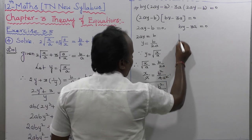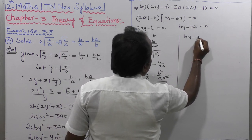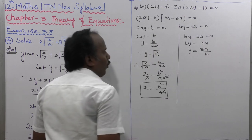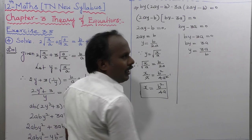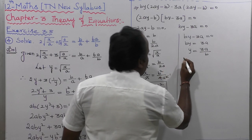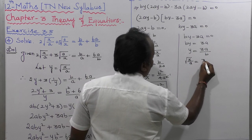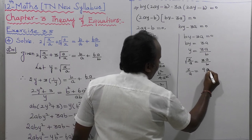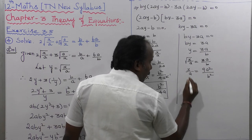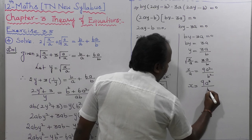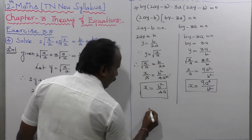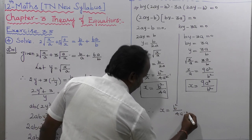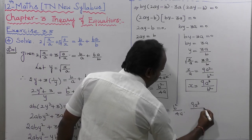Going to the second factor to find the Y value: BY minus 3A equals 0, so BY equals 3A, giving Y equals 3A by B. Since Y equals root of X by A, therefore root of X by A equals 3A by B. Squaring on both sides: X by A equals 9A squared by B squared. By cross multiplication: X equals 9A cubed divided by B squared. That is the second X value. Therefore the solutions of the given equation are: X equals B squared by 4A, and X equals 9A cubed divided by B squared.